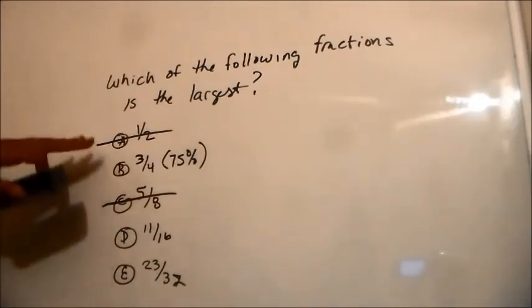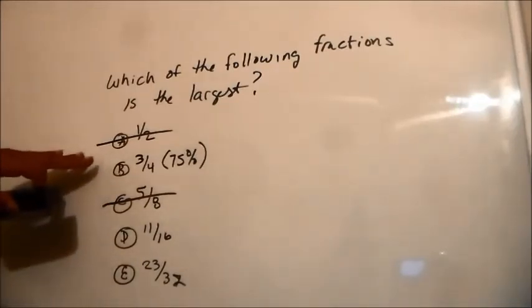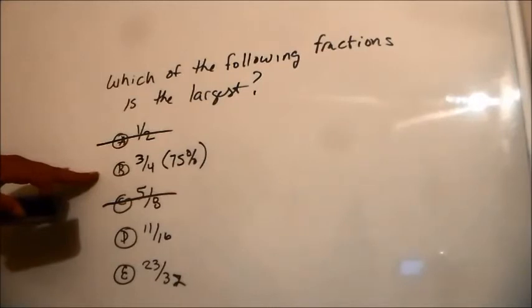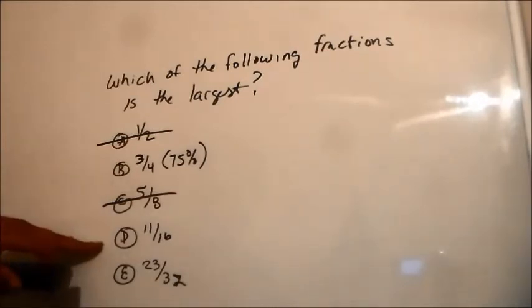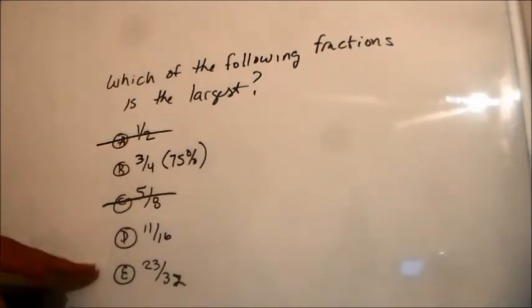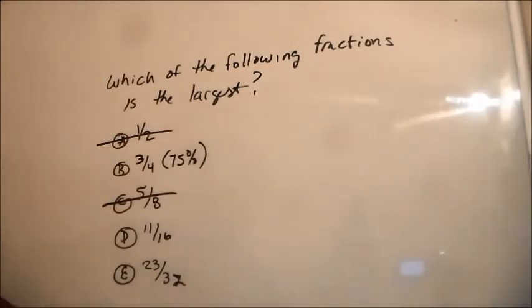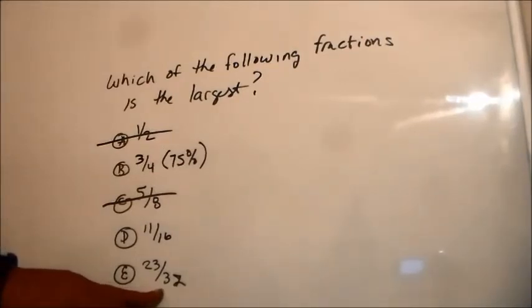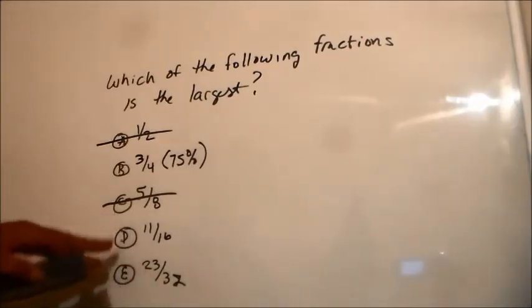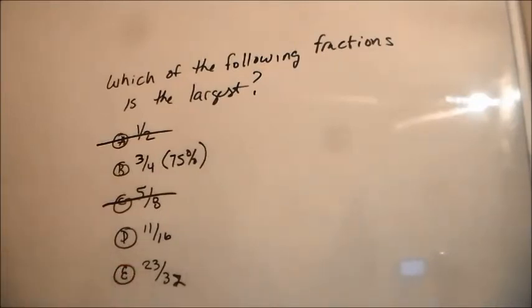So, now all I need to do is figure out what. I already know what this is. So, all I need to do is figure out where 11 16ths are. And, where 23 32nds is. And, I can just look at this. Eight, eight, eight. This is below 75%. I can just see this.